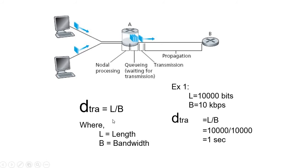Let's look at transmission delay first. Transmission delay = L / B, where L is the length of the data packet and B is the bandwidth of the channel. When you use the internet at speeds of 1 Mbps or 10 Mbps, that is actually bandwidth — not speed. In terms of communication, it is called bandwidth of data. The equation is L divided by B.